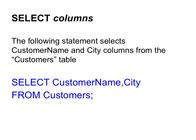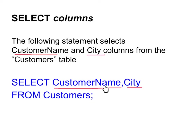Sometimes you just don't need to select every column. For example, in this second statement we can specify the required columns — for example, CustomerName and City columns. So we write: SELECT CustomerName, City FROM Customers. When this statement is executed, all the records will be displayed again, but only the data in the CustomerName and City columns will be shown.